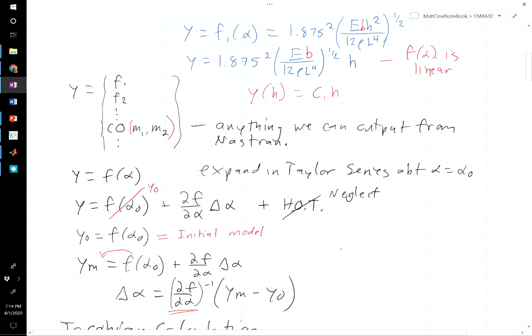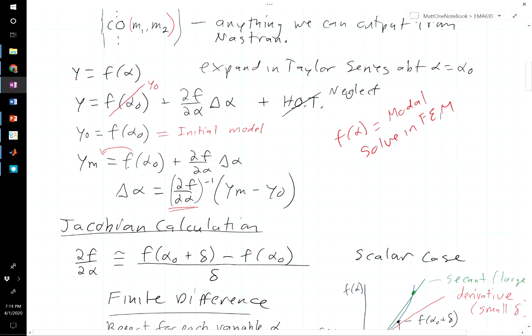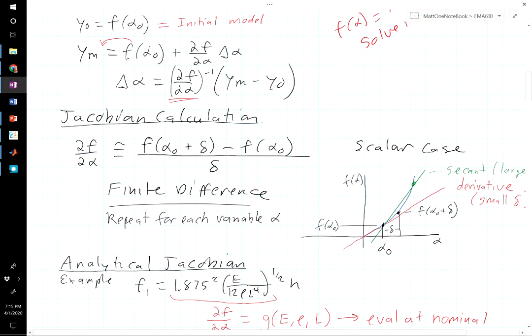Typically, f is not known analytically. F of alpha is something we get from by doing a modal solve in the finite element software. And so we can't express that as a function. What we might do is instead calculate the Jacobian using a finite difference. Or in other words, we evaluate the FEM for the nominal model. We evaluate the FEM for the nominal model plus some perturbation in whatever parameters we think might be important. And if we divide that by the perturbation in the parameter, we get an estimate of one column of the Jacobian. And we could repeat that for any set of parameters until we had the full Jacobian matrix.